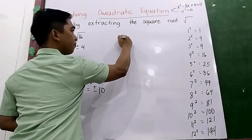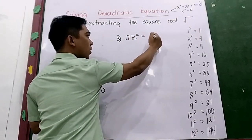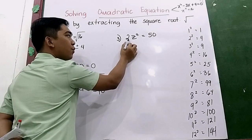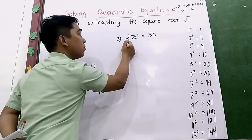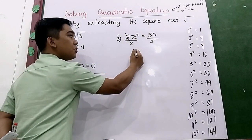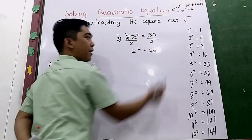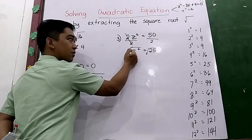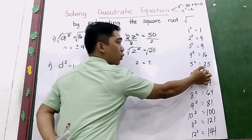Number 3: 2z squared is equal to 50. We have a coefficient of 2 beside the variable, so we need to eliminate it by dividing both sides by 2. The 2 cancels out, giving us z squared is equal to 50 divided by 2, which is 25. Now we extract the square root: z is equal to plus or minus the square root of 25, which is plus or minus 5.